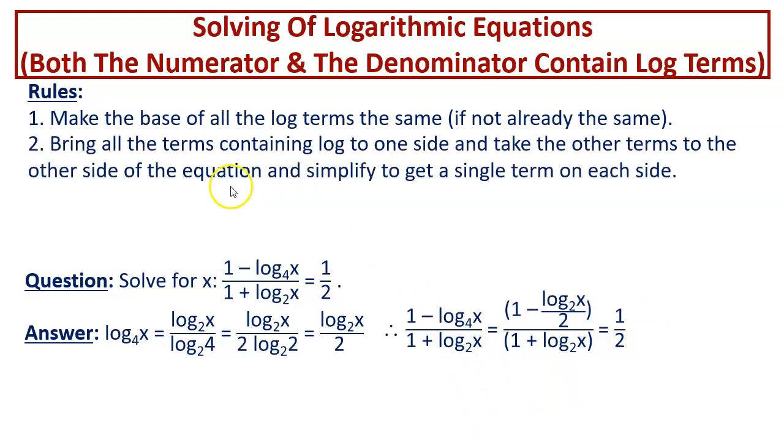And then we come to the next rule. Bring all the terms containing log to one side and take the other terms to the other side. The other terms means the constants, the pure numbers to the other side of the equation and simplify to get one single term on each side. Over here we are having one single term on the left hand side, one single term on the right hand side.